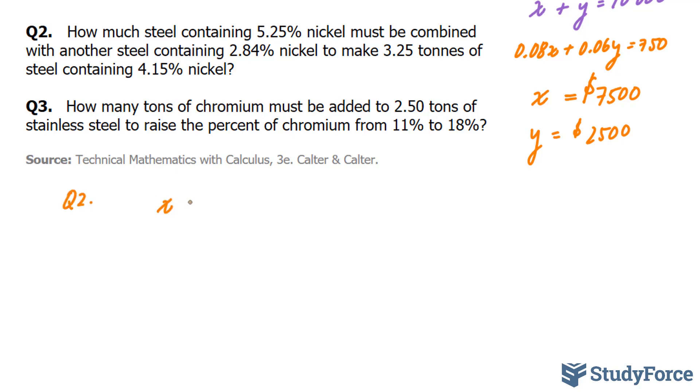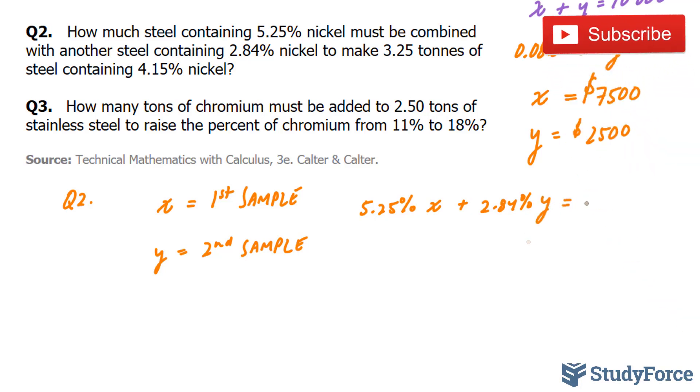We'll call the first sample X, and Y will be the second sample. And if we combine the 5.25% of the first one, and I'll convert this to decimal in a second, plus 2.84% of the second one, you should end up with 3.25 tons of 4.15%.